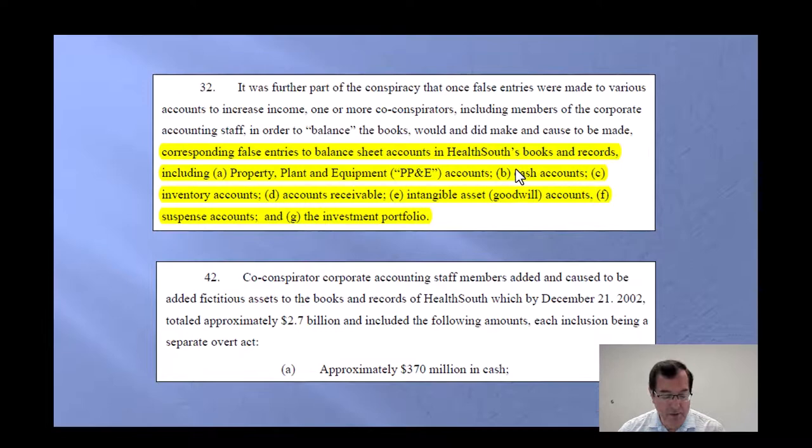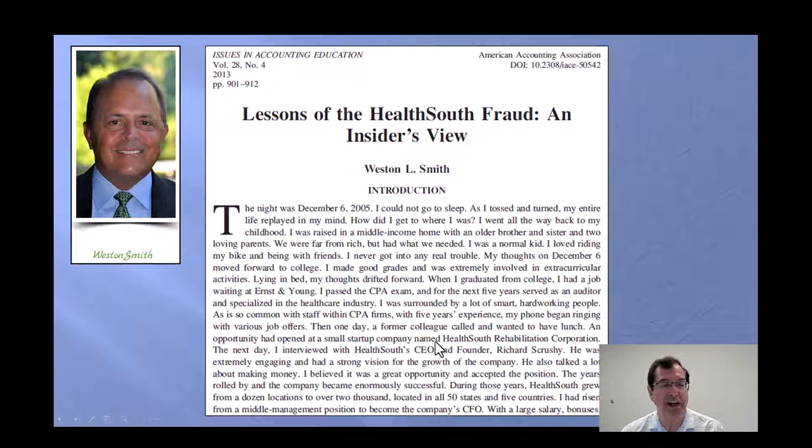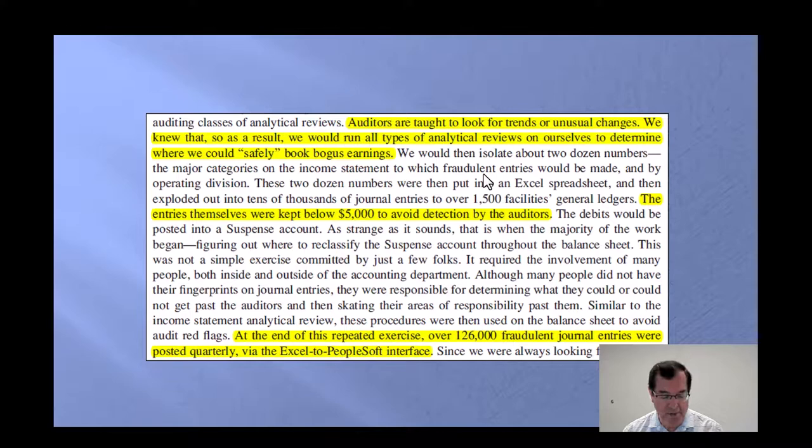Let's move on to the HealthSouth fraud, because we care about below the testing threshold journal entries. HealthSouth overstated their assets by approximately $2.7 billion, including overstated cash by $370 million. How did they do this? Fortunately, Weston Smith published an article saying how they exactly did it. The first one is that the journal entries, the fraudulent journal entries, were kept below 5,000, which was what they knew to be the auditor's testing threshold. At the end of this repeated exercise, 126,000 fraudulent journal entries quarterly, meaning over half a million journal entries, fraudulent journal entries, per year.